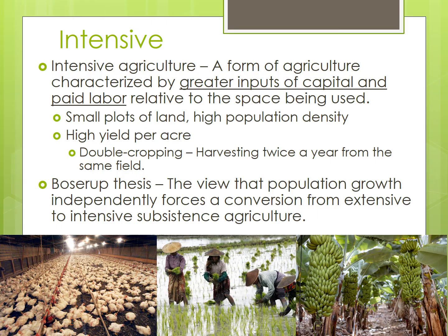One technique to maximize output on a small amount of land is known as double cropping, which is harvesting twice a year from the same field. We see this often with rice paddies, as the climate does not limit production to a single season. Another technique is known as intercropping, or multi-cropping, when farmers grow two or more crops simultaneously in the same field. Increased land use intensity is a common response to population growth. In fact, Ester Boserup, a critic of Thomas Malthus, argued that population growth independently forces a conversion from extensive to intensive subsistence agriculture. This has allowed many areas undergoing rapid population growth to remain within their carrying capacity and to feed the growing population.